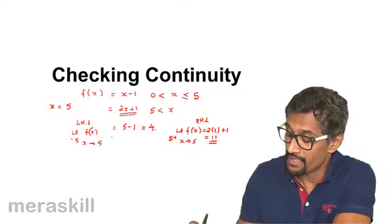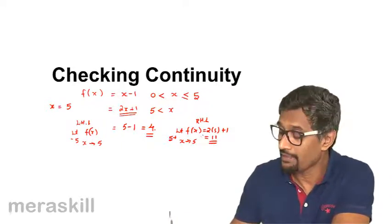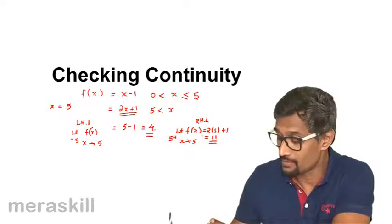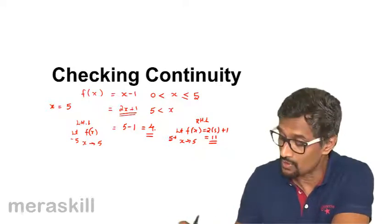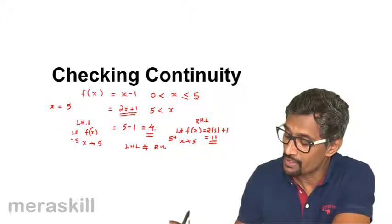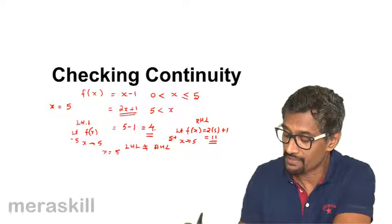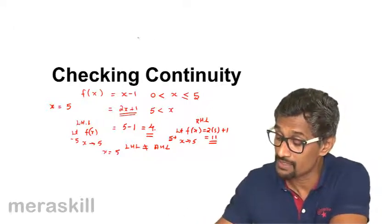So that means the left-hand limit is 4 and the right-hand limit is 11, and they are nowhere near equal, they're not at all equal. So left-hand limit is not equal to right-hand limit, so we say that the function is discontinuous at x equals 5.